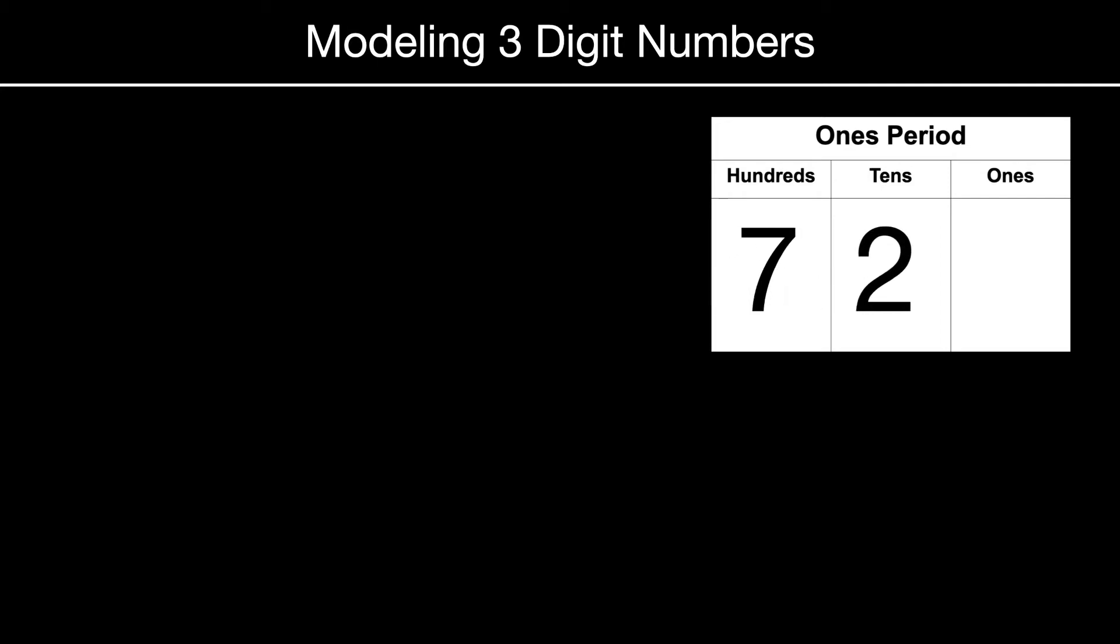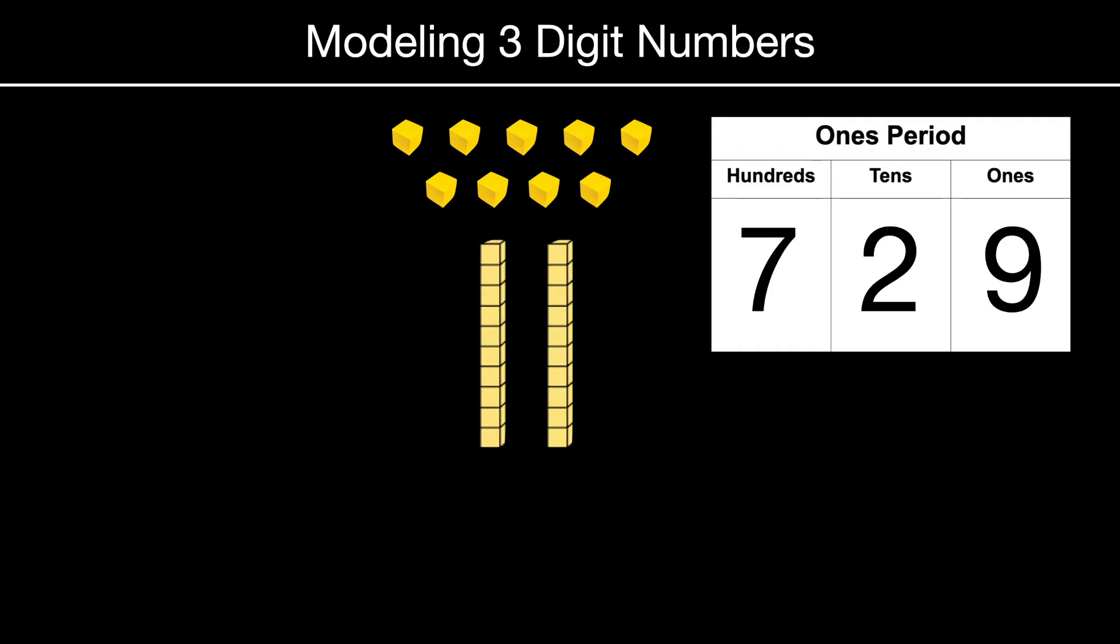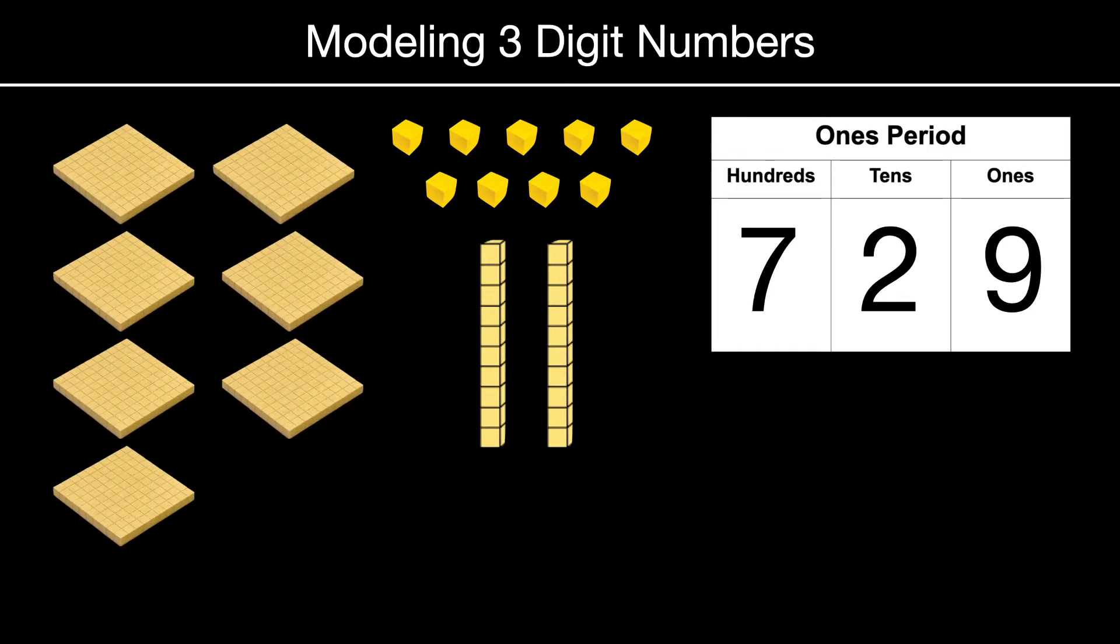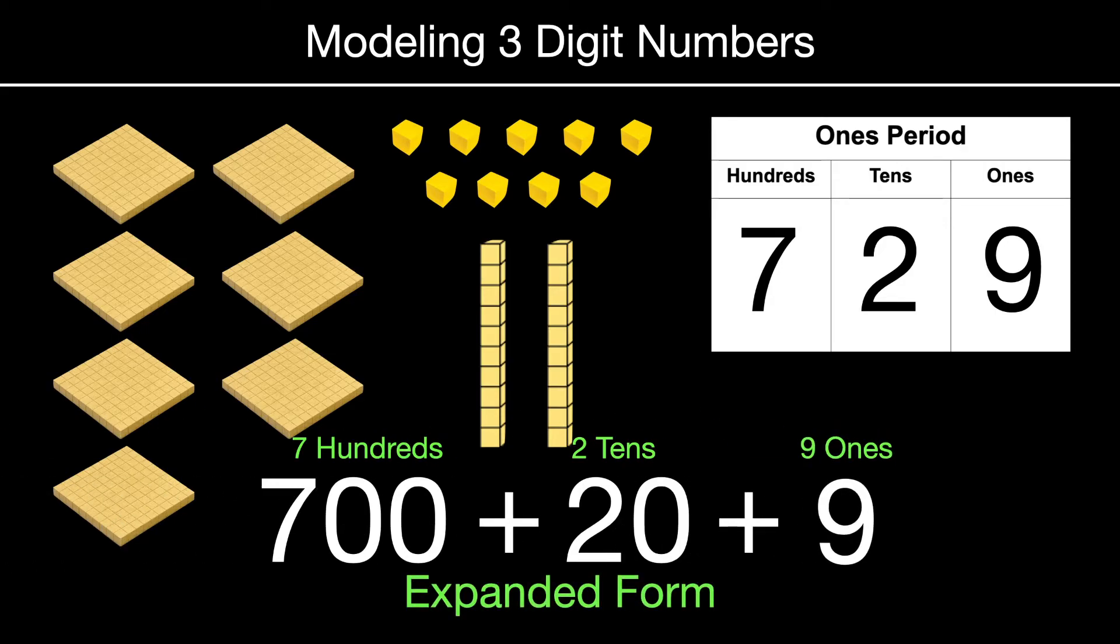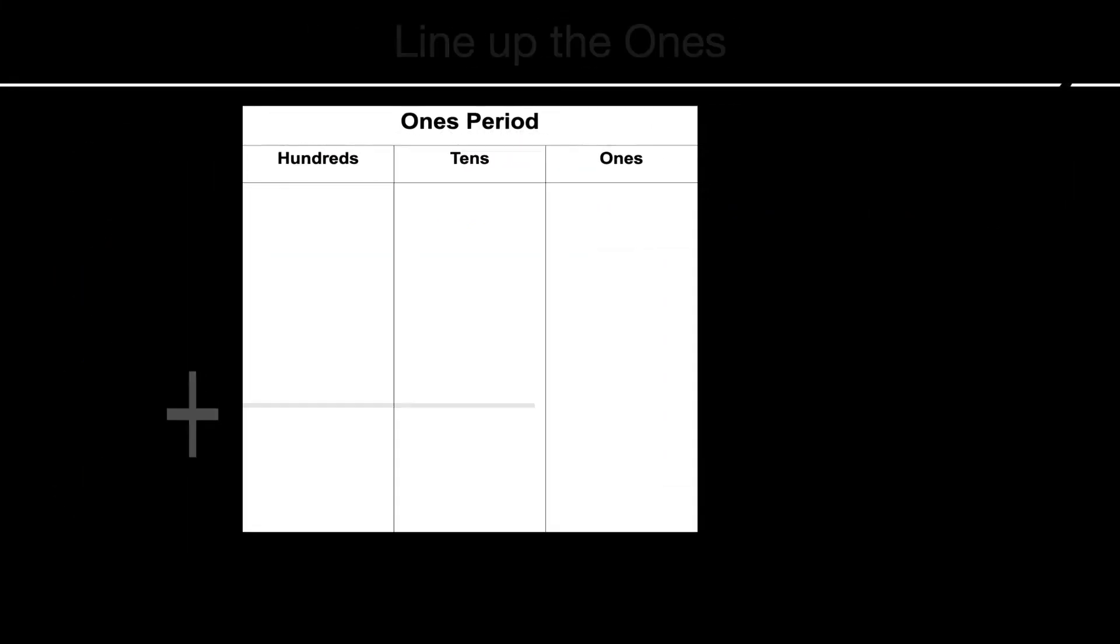Let's model our original number of seven hundred twenty-nine. We would have nine ones, our two tens, and our seven hundreds. We could also show that in expanded form, we could say that there's seven hundreds, right, for seven hundred, and two tens, which is our twenty, and our nine ones. That's called expanded form, because we have our seven hundreds, our two tens, and our nine ones. And that is our three different place values to make up seven hundred twenty-nine.